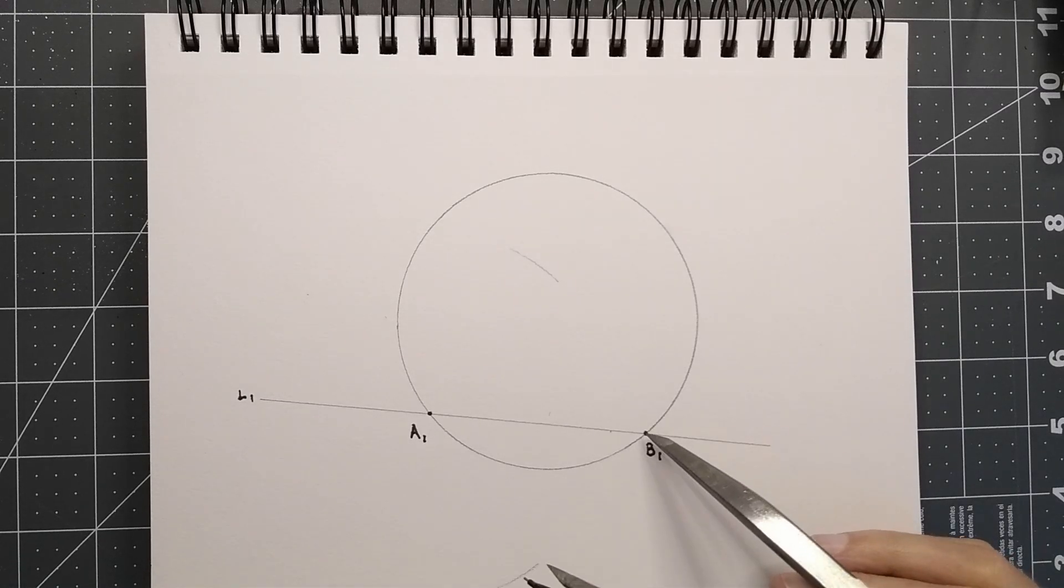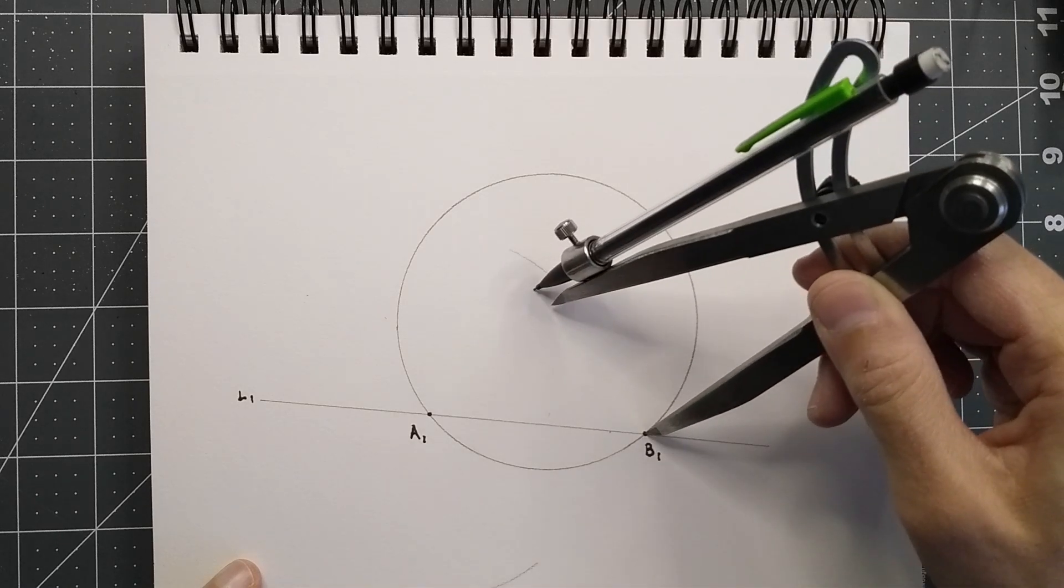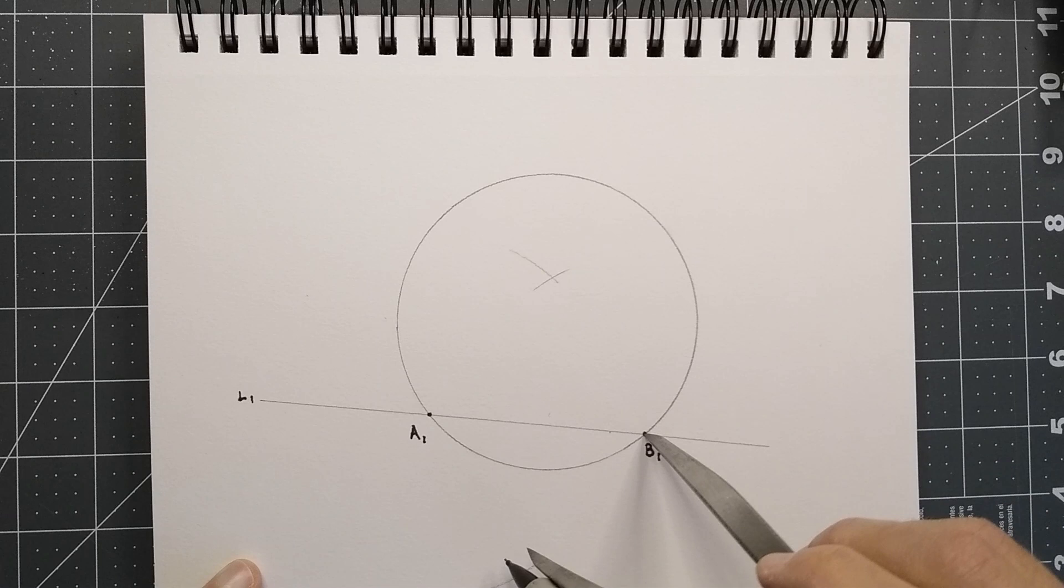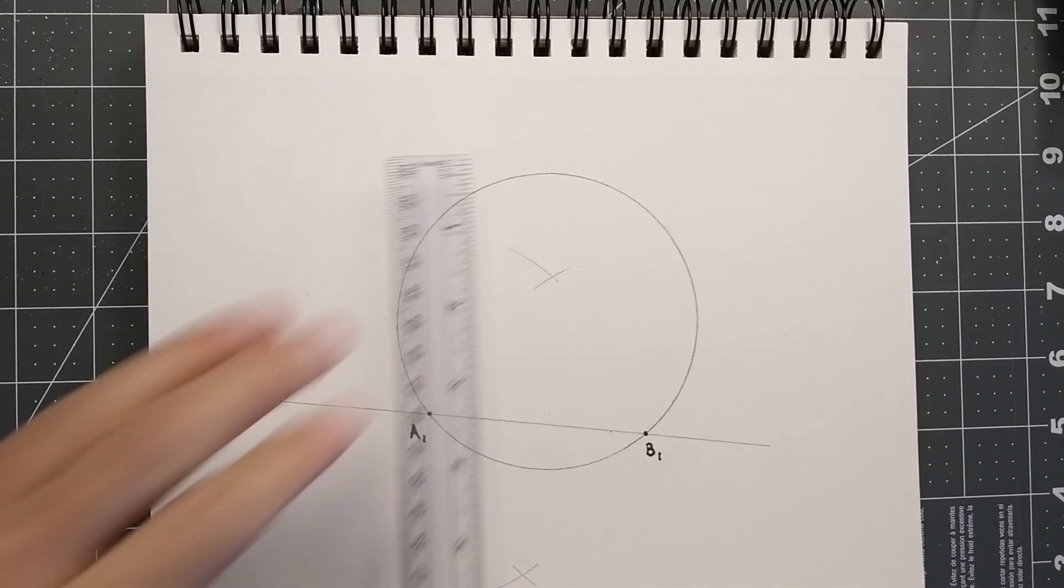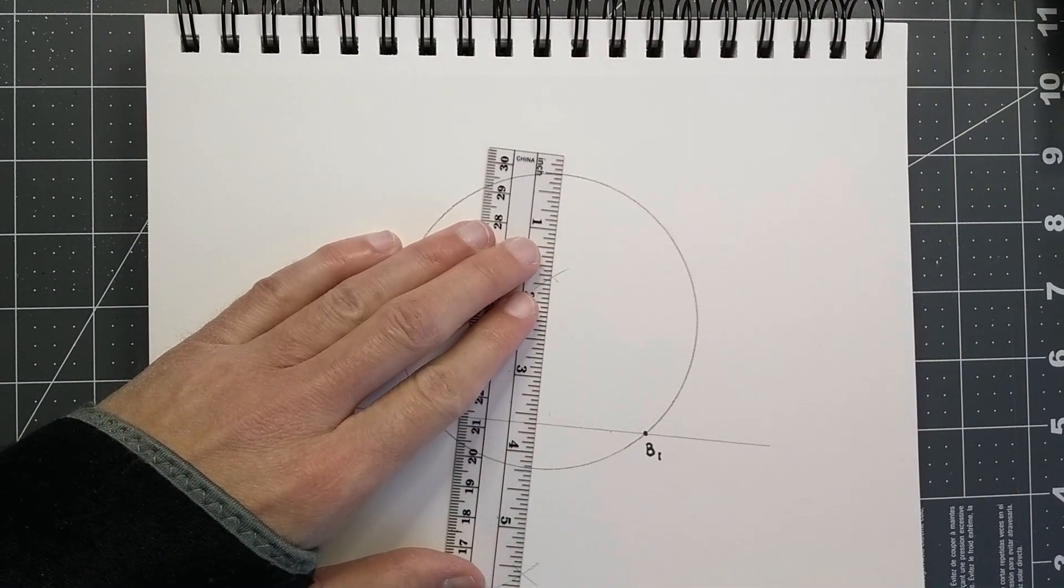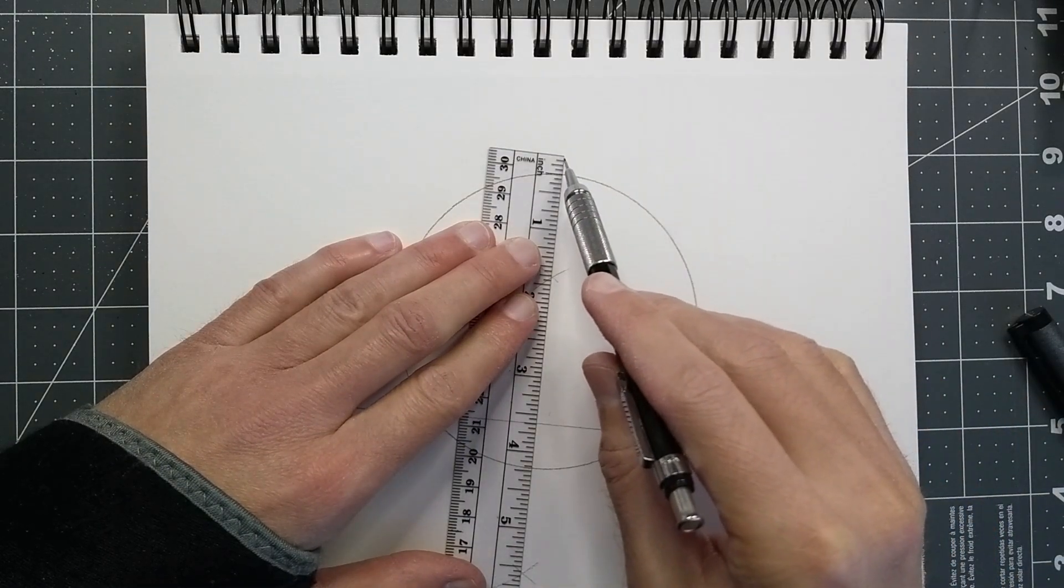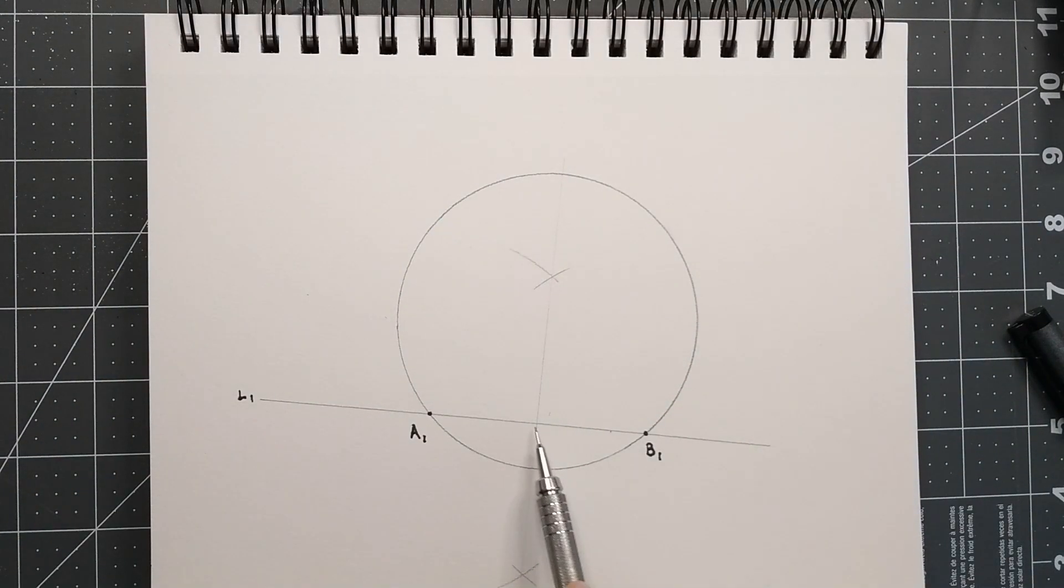Then we'll set the needle on point B and we'll do the same thing. Cross our line here. And then we'll cross our second curve. And you'll see this gives us two points. So, if we connect those points, that gives us a line right here that crosses the center of L1.